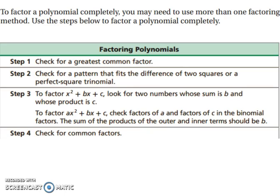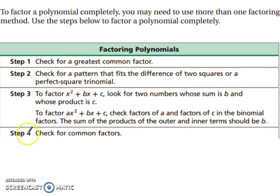To factor a polynomial completely, you may need to use more than one factoring method. Step 1: check for the greatest common factor. Step 2: look for a pattern that fits the difference of two squares or a perfect square trinomial. Step 3: factor x squared plus bx plus c, or ax squared plus bx plus c — basically, factor your trinomial. Step 4: check for common factors again.